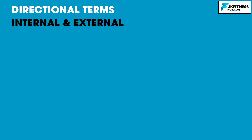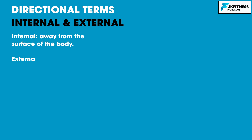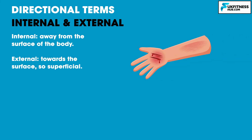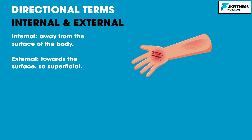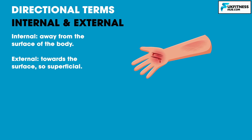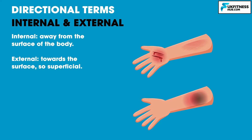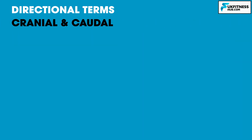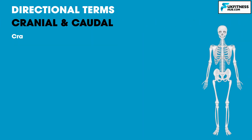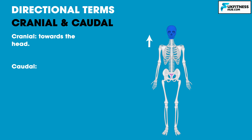Internal means away from the surface of the body, whereas external means towards the surface — so superficial. For example, external bleeding would suggest that you are able to see blood as it is a superficial wound nearer the surface of the skin. An internal bleed, however, you may not be able to visibly see blood as it is away from the surface of the body. Cranial means towards the head and caudal means towards the tail.